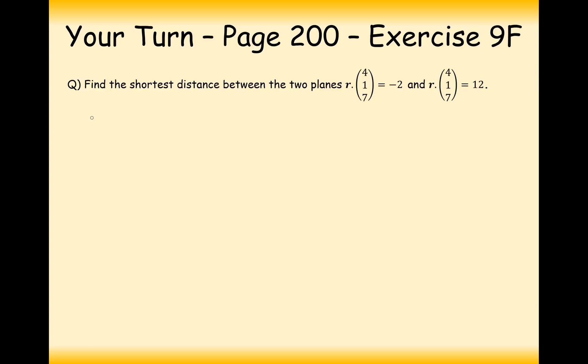Well done for pausing the video and having a go at this one here. The first thing we need to work out is the distances for both of these planes to the origin. In this case here, it's going to be -2 over the square root of 16 add 1. So 4² add 1² add 7². That's better doing... 49 add 1 is 50. No, 66, isn't it?